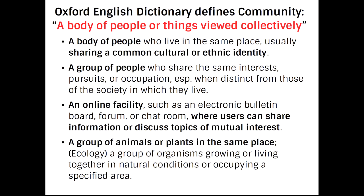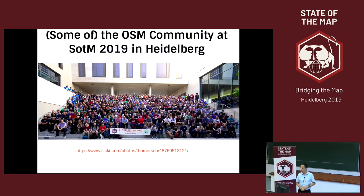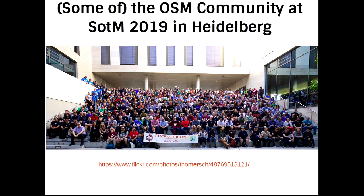Linking into my talk today, a community can also be a group of animals or plants in the same place sharing the conditions of the environment they are living in. This is what some of the OSM community looked like from yesterday — a fantastic wide-angle photograph from yesterday afternoon. When I say 'some of,' this is obviously not all of the OSM community; there are lots of people around the world who are not here today.